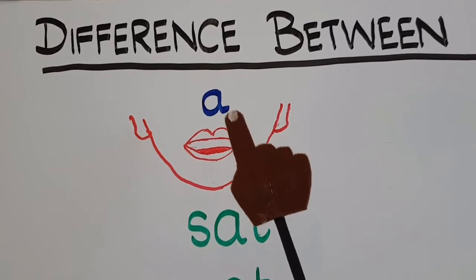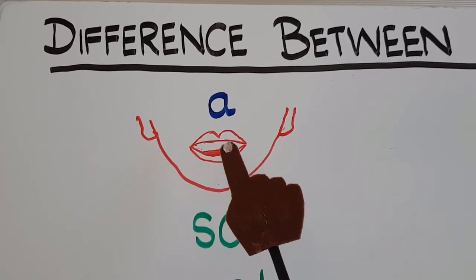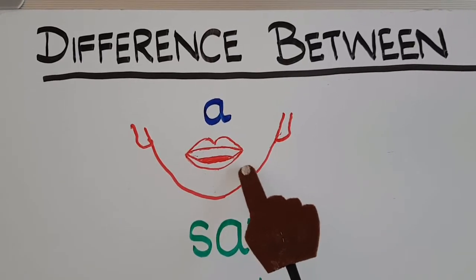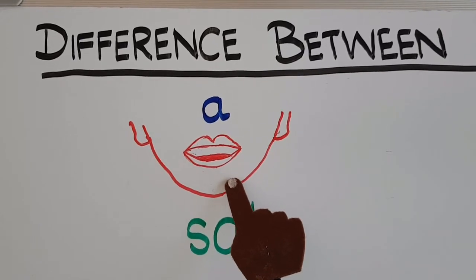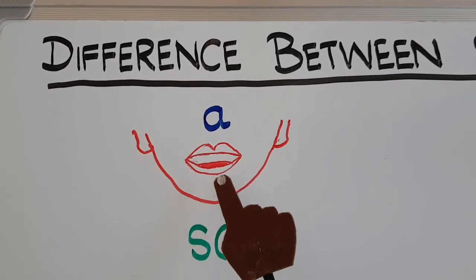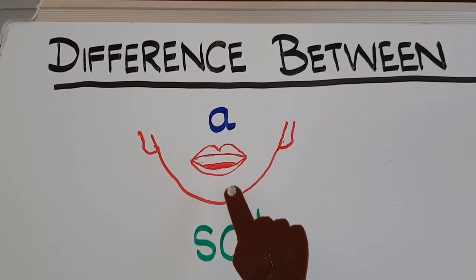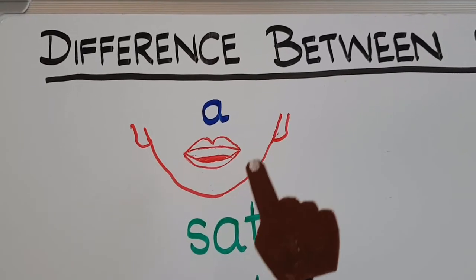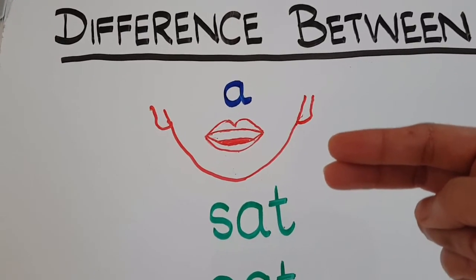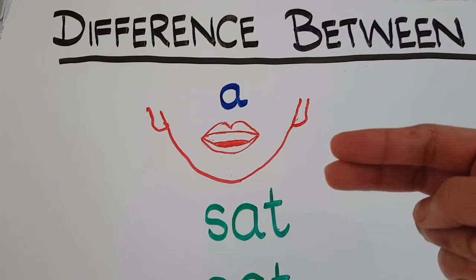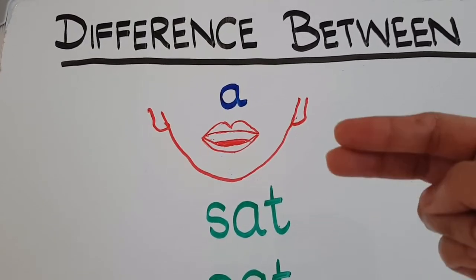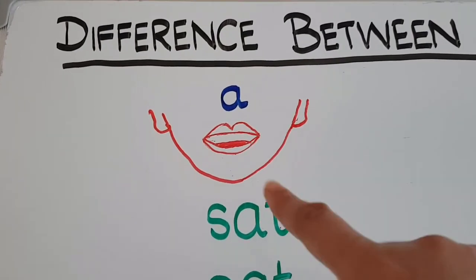To produce the A sound, you need to open your mouth, drop down your jaw, and with a stretch at the sides, say this sound from your throat. Try it out — open your mouth, drop down your jaw, and say A. If you are a beginner, you can try a trick: take two or three fingers and keep them between your lips to get an idea of how much your mouth should open.